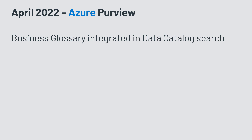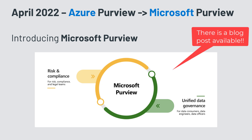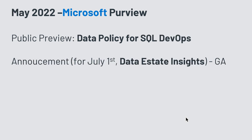In April, the business glossary search was improved — search within the Purview data catalog now returns business glossary entries too. But then the Purview team decided to not only rename but to integrate many things into Microsoft Purview. We switched from Azure Purview, the data governance suite, into Microsoft Purview, where one of the multiple tools integrated is the formerly known Azure Purview data catalog. So beginning of April 2022, it's no longer Azure Purview — it's Microsoft Purview.